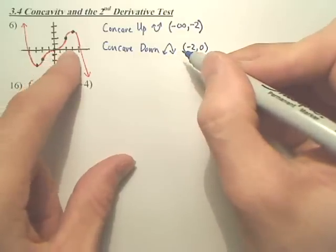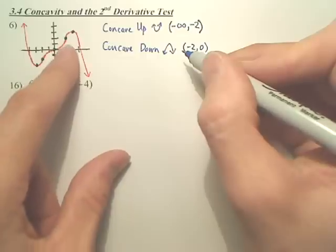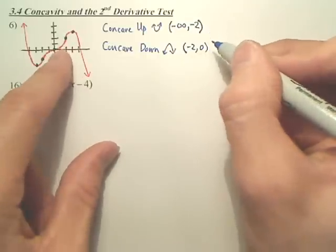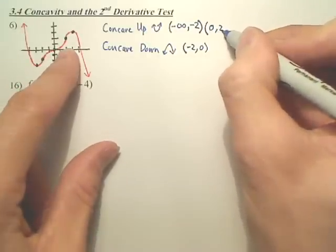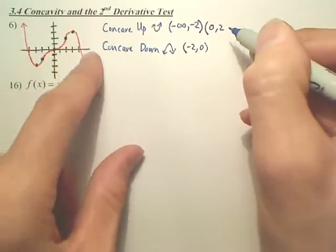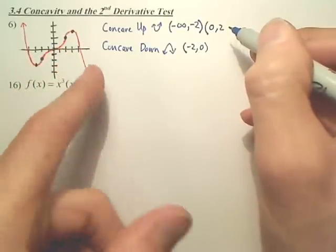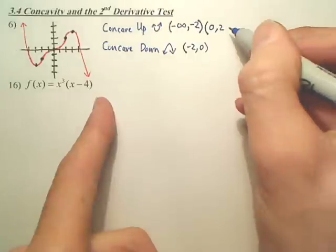And then does it turn to be happy again, like partial frown, partial happiness? So that one, we're back to happy from 0 to 2. And then from 2 to infinity, is it sad again? From here to here, do you have a frown?